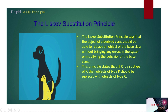This principle states strictly that if C is the subtype of P — where C is the child and P is the parent — then objects of type P should be replaceable with objects of type C. So the object of the parent type should be replaceable with the object of the child type.